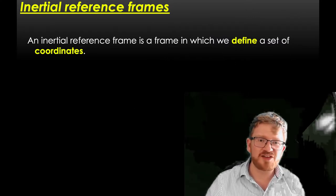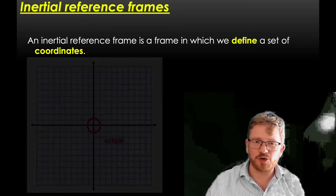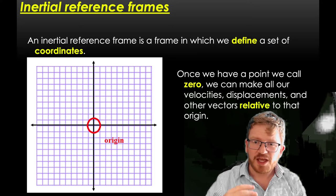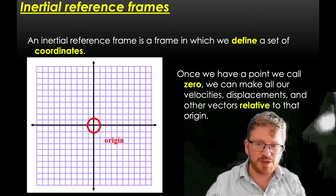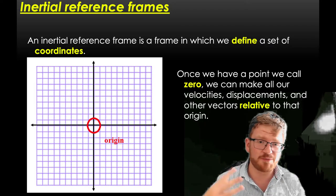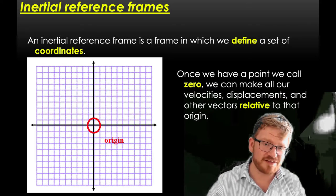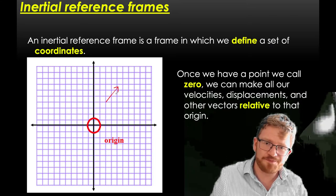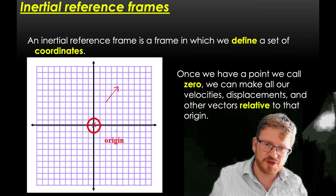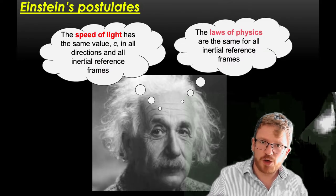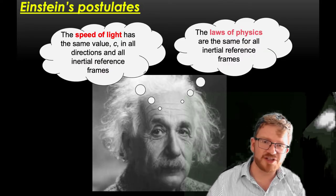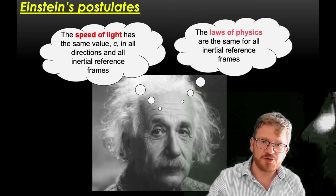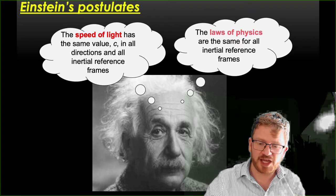What we do as physicists is define an inertial reference frame with a set of coordinates — Cartesian coordinates — where we say where zero is. Once we have that zero, we make everything else that's a vector relative to that origin, because a vector is always just a measure of something with magnitude and direction. Einstein then postulated two things: first, that the speed of light, c, has the same value in all directions and in all inertial reference frames.